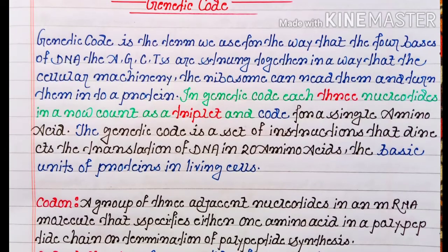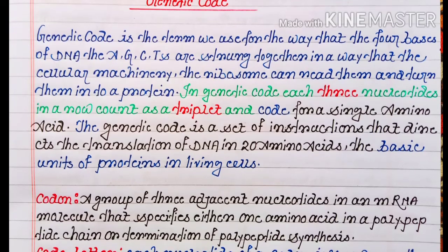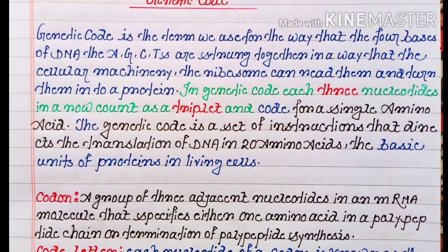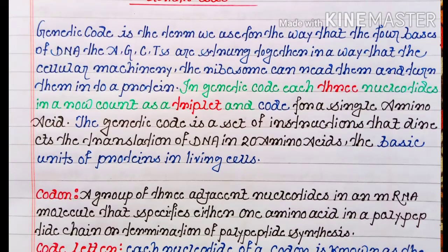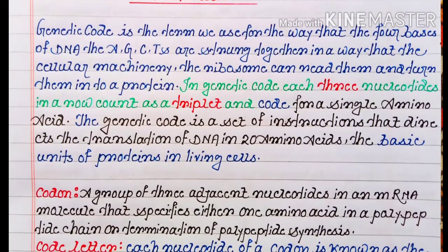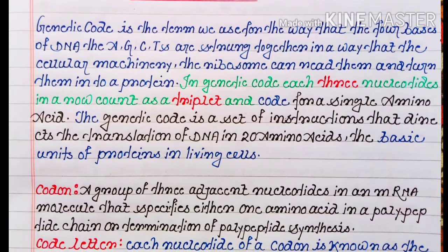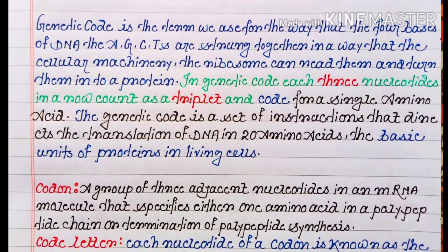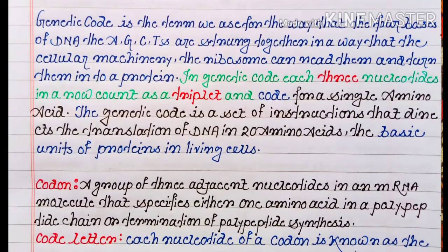In genetic code, each three nucleotides in a row counts as a triplet and codes for a single amino acid. The genetic code is a set of instructions that directs the translation of DNA into 20 amino acids, the basic units of proteins in living cells.